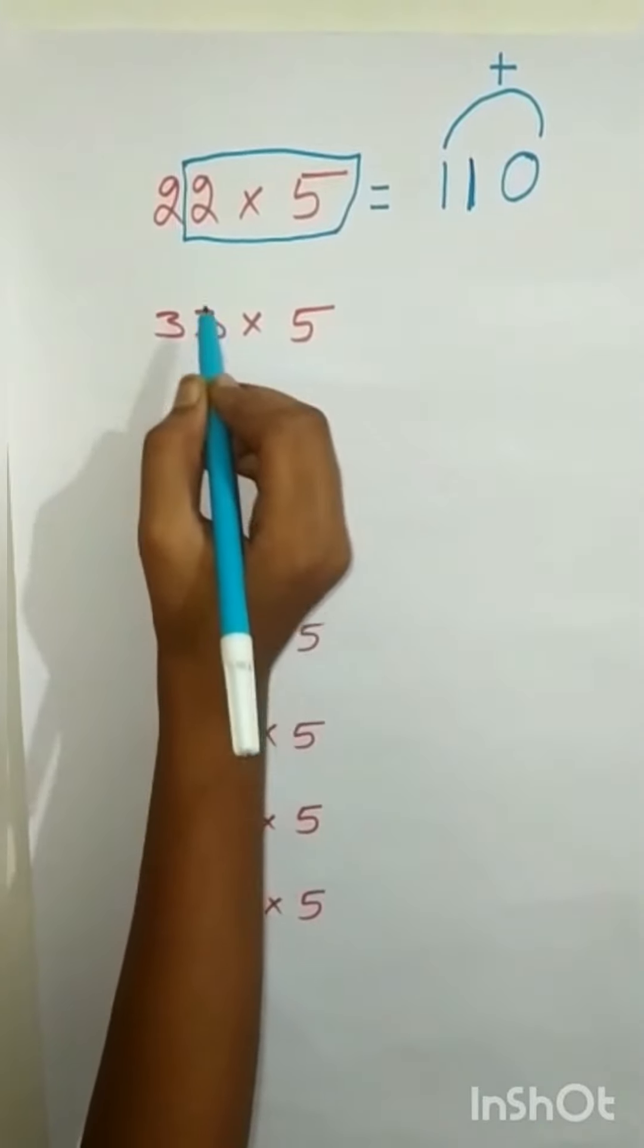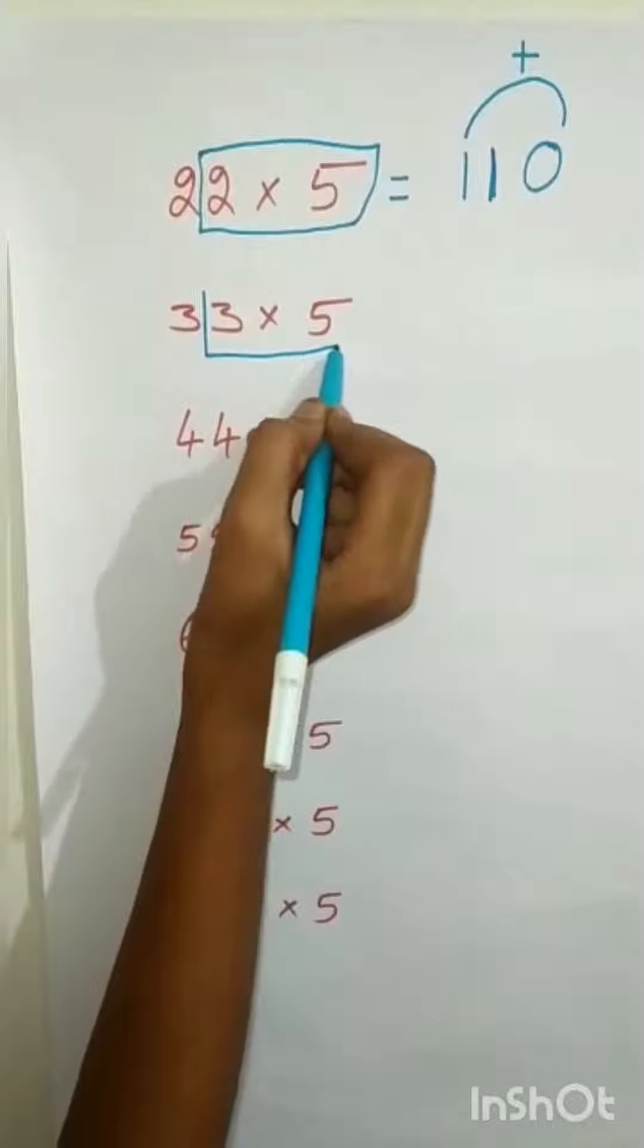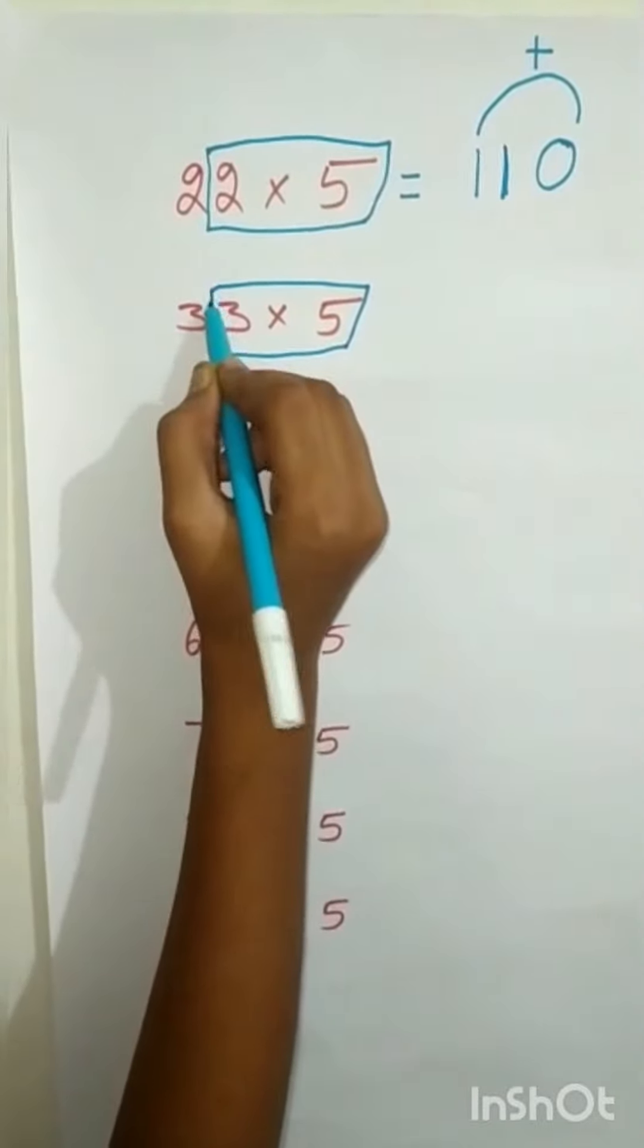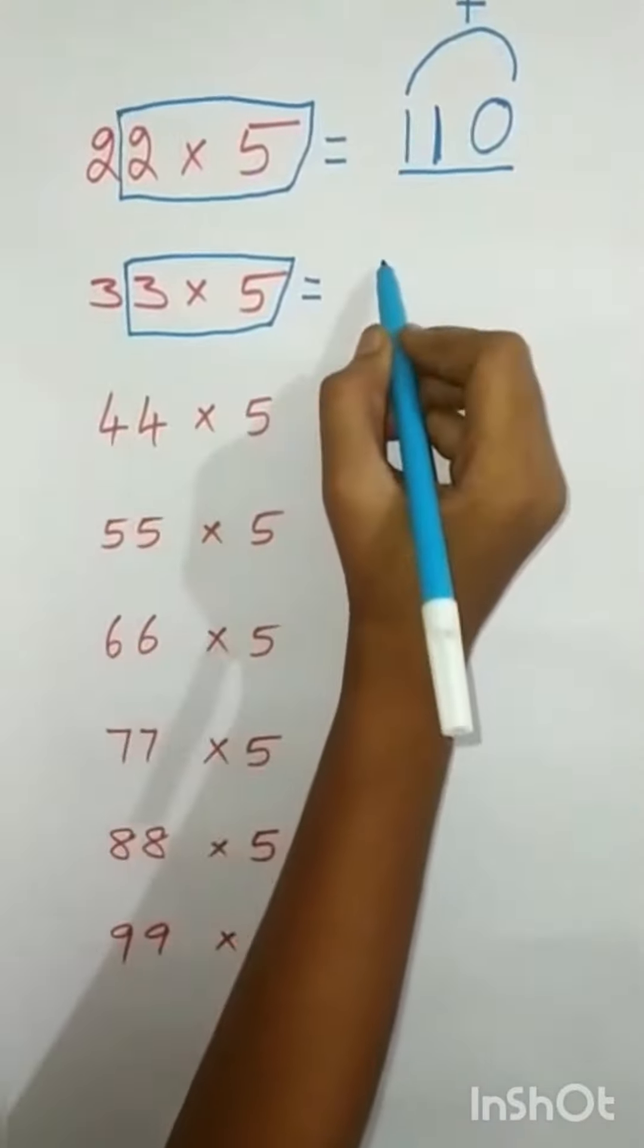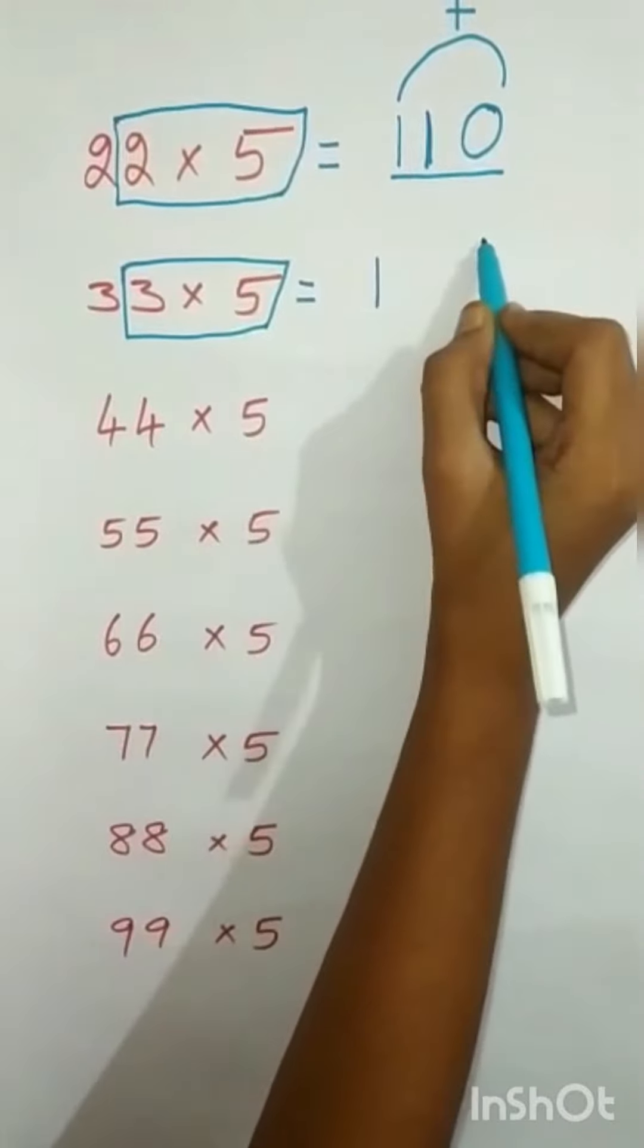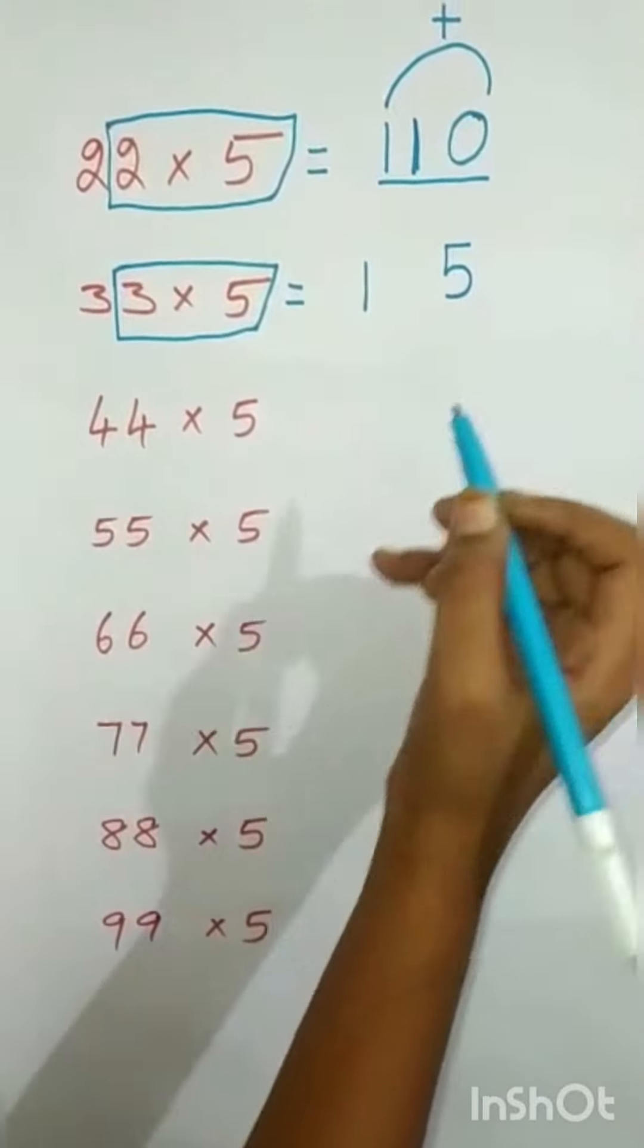33 into 5. 3 into 5 is equal to 15. You have to write like this.